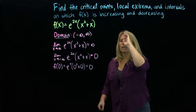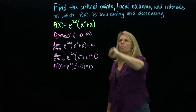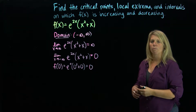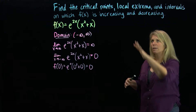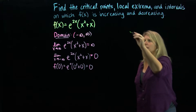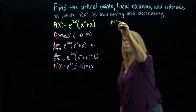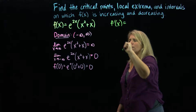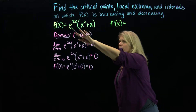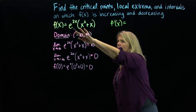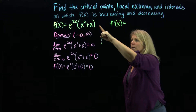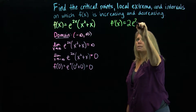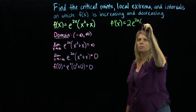In this question, we need to find critical points. The first thing we want to do is find our derivative. We're going to need the product rule for our derivative. The derivative of e to the 2x power will be e to that power times the derivative of what's inside — a little chain rule there as well.